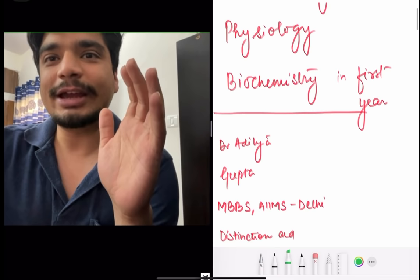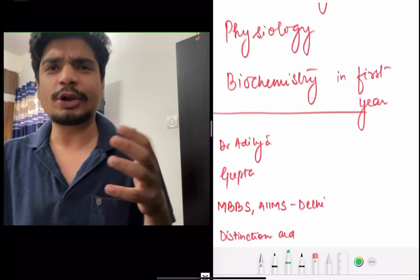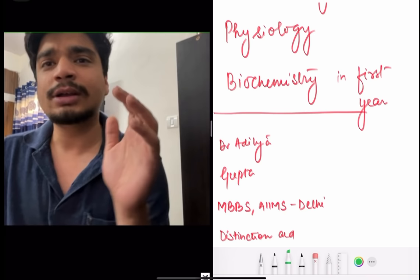The problem with Physiology and Biochemistry - the thing with Anatomy is that Anatomy is tough because it's a lot of memorization. And after a point of time you get a hang of it, you see the dissection. After a point of time, you have to memorize it a lot, there is no concept.